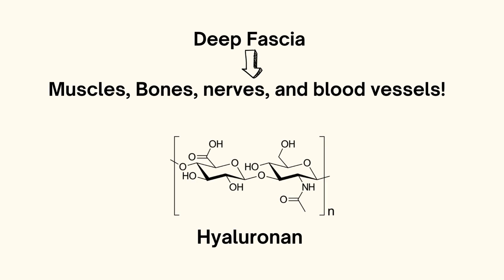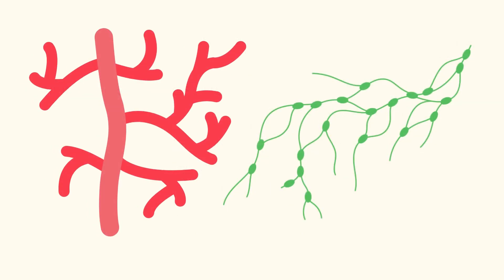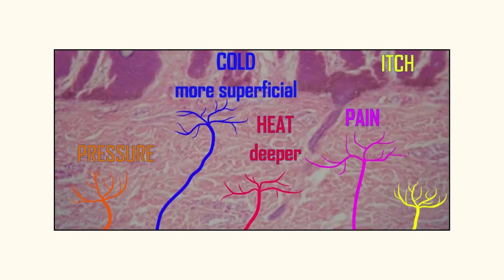Moving to the next layer, we have deep fascia. Deep fascia actually surrounds the bones, muscles, nerves, and blood vessels, and it commonly has a more fibrous consistency and is rich in hyaluronin as compared to the other subtypes. Deep fascia tends to be highly vascularized and contains well-developed lymphatic channels. In some instances, deep fascia can also contain free encapsulated nerve endings.